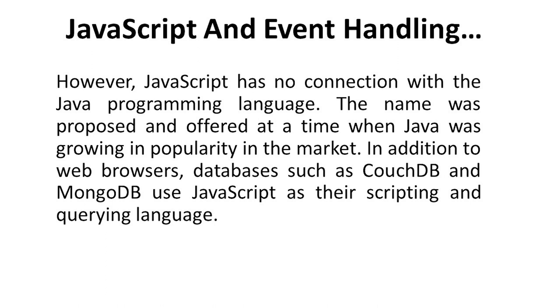JavaScript has no connection with the Java programming language. The name was proposed at a time when Java was growing in popularity in the market. In addition to web browsers, databases such as CouchDB and MongoDB use JavaScript as their scripting and querying language. It is important to note that JavaScript has nothing to do with the Java language name.